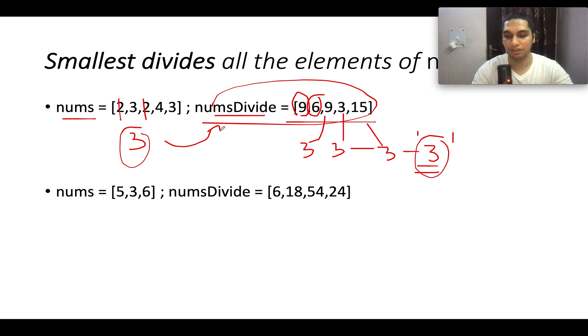Now let's take a slightly different example so that you get a good hold of the concept. We have the nums divide array as 6, 18, 54, 24. In the first step, we will identify the GCD of the entire array. GCD of 6 and 18 turns out to be 6, GCD of 6 and 54 turns out to be 6, and GCD of 6 and 24 turns out to be 6. So the GCD of the entire array is 6.